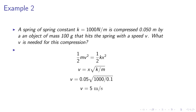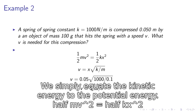Half m v squared equals half k x squared. So we simply equate the kinetic energy to the potential energy. V equals x times the square root of k over m. So we simply obtain v equals 5 meters per second.